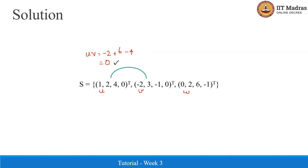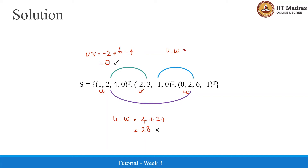Now let us check whether u and w are orthogonal. The dot product u dot w is equal to 4 plus 24, that is 28, which is not equal to 0. Therefore u and w are not orthogonal vectors. Let us check whether v and w are orthogonal. The dot product v dot w is equal to 6 minus 6, which is 0. Therefore u,v and v,w are orthogonal pairs of vectors.